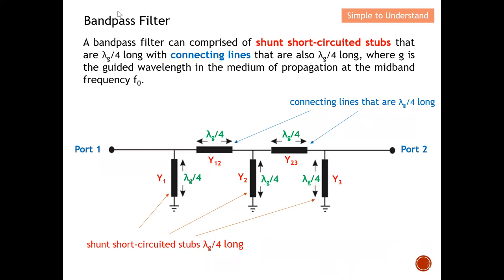A bandpass filter can be implemented on a microstrip line using shunt short circuit stubs. You can see that there are three stubs — on one end they are short-circuited, and they are connected in shunt, hence the name 'shunt short circuit stubs.' All three have a length of quarter wavelength. On the other side there are connecting lines, which also have a length of quarter wavelength.